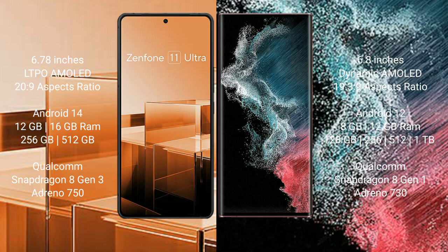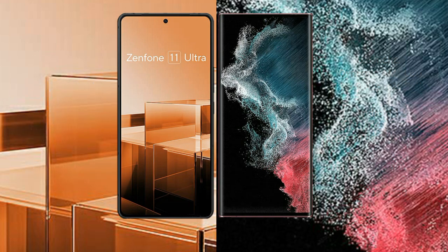The Asus Zenfone 11 Ultra comes with 12GB or 16GB RAM and 256GB or 512GB internal storage, powered by the Qualcomm Snapdragon 8 Gen 3 processor with Adreno 750 GPU. The Samsung Galaxy S22 Ultra comes with 8GB or 12GB RAM and 128GB, 256GB, 512GB, or 1TB internal storage, powered by the Qualcomm Snapdragon 8 Gen 1 processor with Adreno 730 GPU.